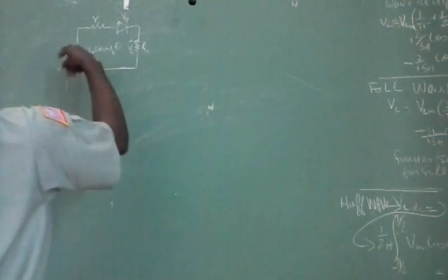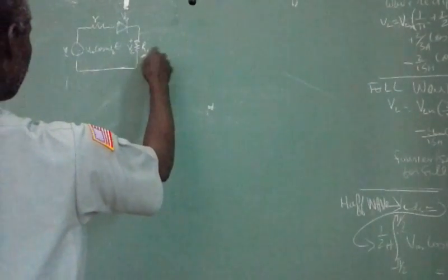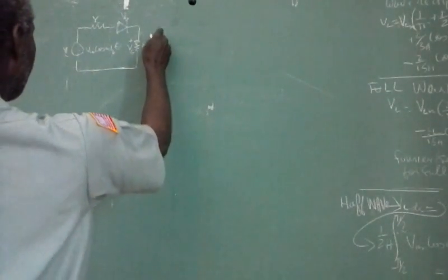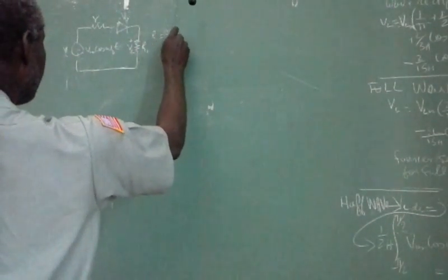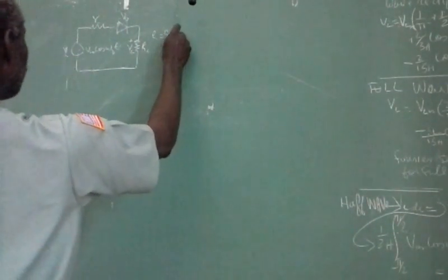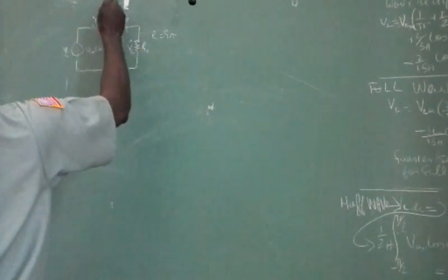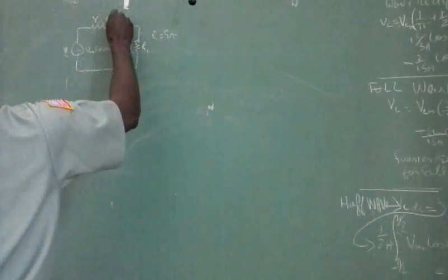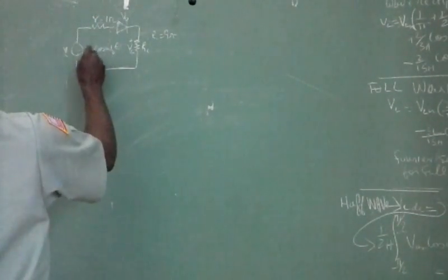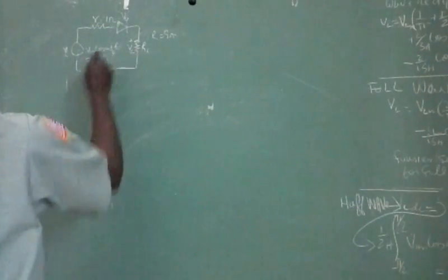Let's recall the values: R equals 9 ohms, RL equals 12 ohms, and RI equals 10 ohms.